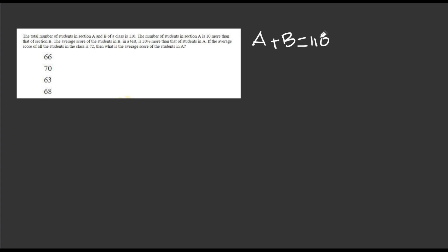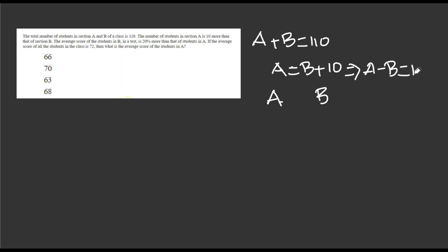What's the next sum? The total number of students in Section A and B is 110. So A plus B equals 110. But the number of students in Section A is 10 more than Section B. So A equals B plus 10. If we solve, A is 60 and B is 50.